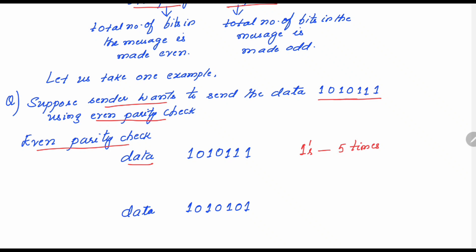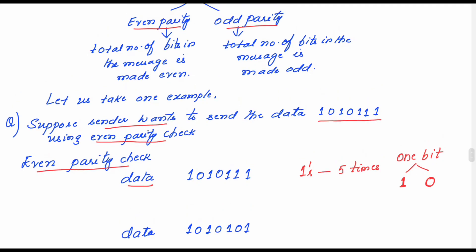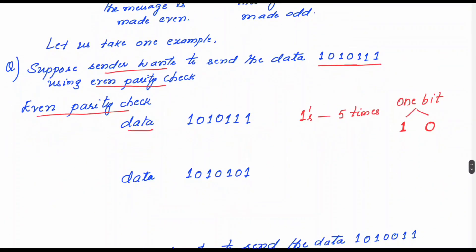That one appended bit can either be 1 or 0. For data 1010111 with five 1s, to make the count even (6), the sender appends 1. So the sender transmits 1010111 1, where the last bit is the parity bit. At the receiver side, the receiver counts the number of 1s — here, six 1s appear, which is even, so no error is detected. The receiver has received the data correctly.